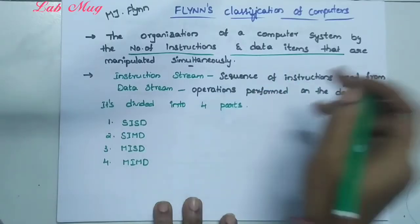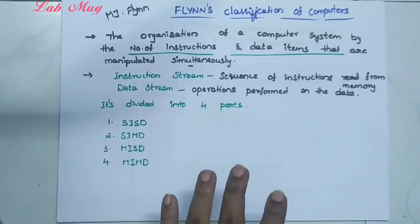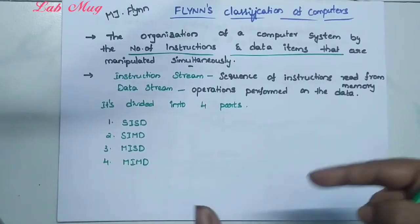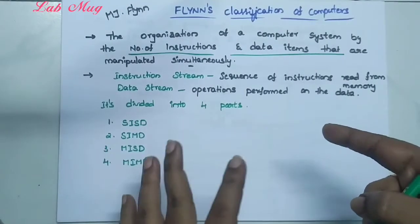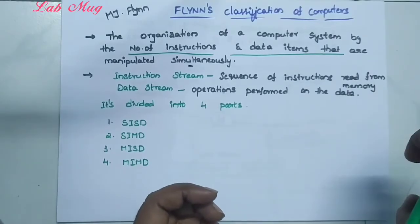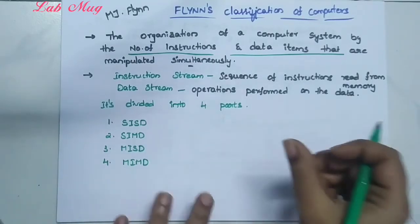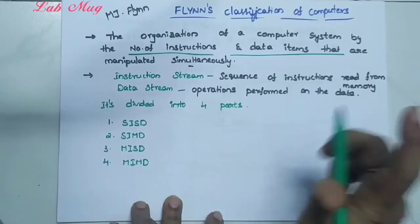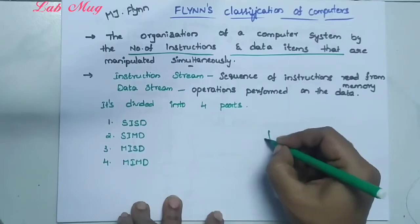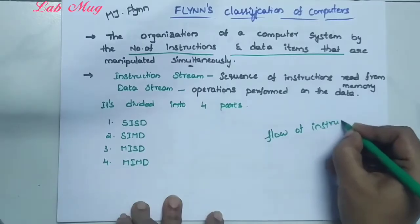Instruction stream means the sequence of instructions read from memory — that is, the order of instructions that we read one by one from memory. Data stream means the data on which we perform operations. The word 'stream' means flow of instructions or data.